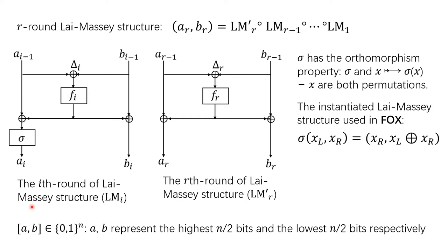For the form of the structure, the S-map is an orthomorphism sigma, and BR has the same form as BR. The S-map has the orthomorphism property: sigma and the maps x → sigma(x) and x → sigma(x) − x are both permutations. Here we attack the instantiated Lai-Massey structure used in FORK, where sigma(xL, xR) equals (xR, xL XOR xR). We also define a and b to represent the highest n/2 bits and the lowest n/2 bits respectively.